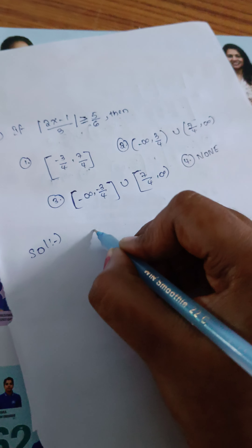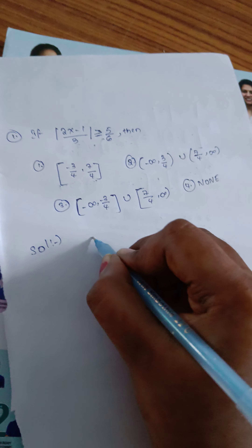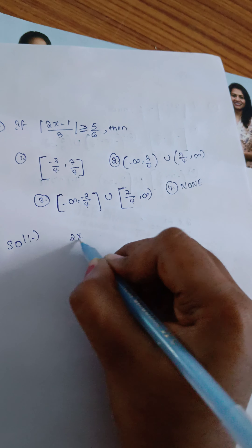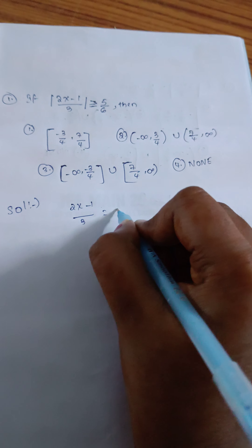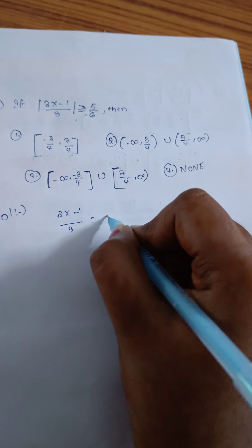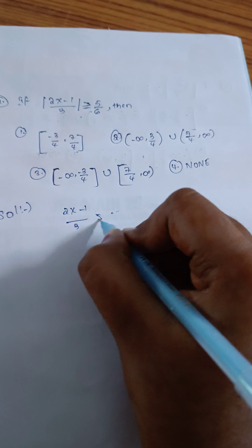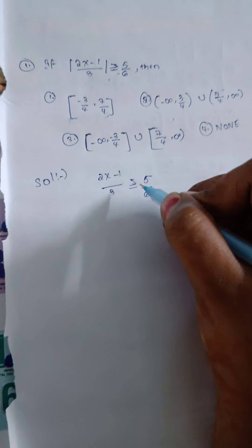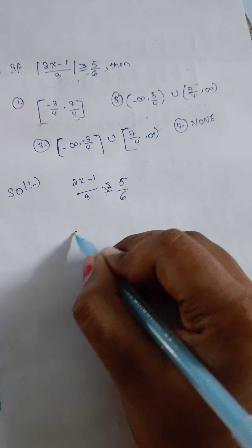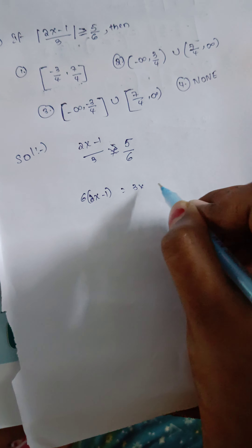I am going to use cross multiplication. So I have 2x-1 over 3 is greater than or equal to 5 over 6. Using cross multiplication: 6 times (2x-1) is equal to 3 times 5.